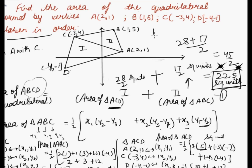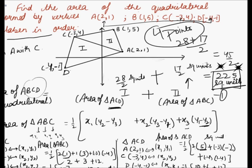So this is how we can calculate the area enclosed by 4 points using the formula for area of a triangle in coordinate geometry. That's all in this video. Thanks for watching Edupedia World videos.